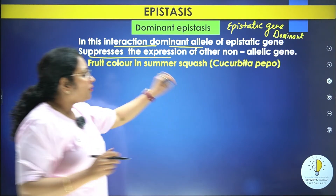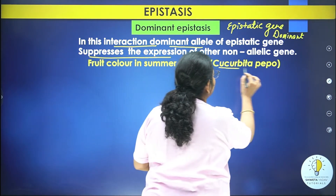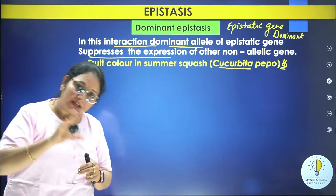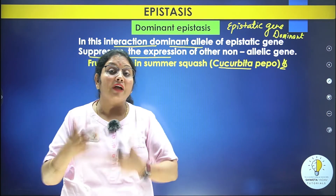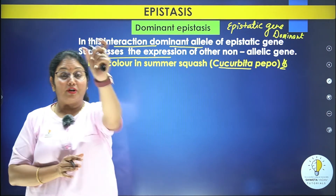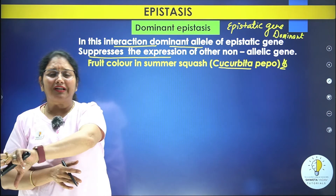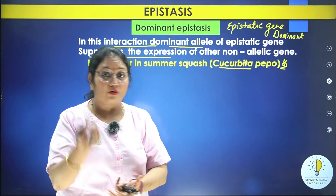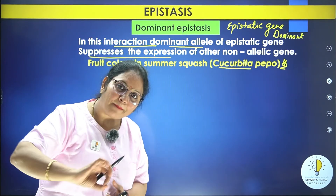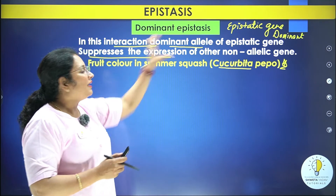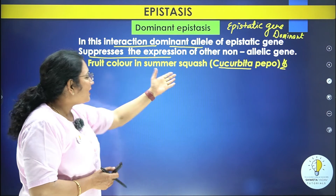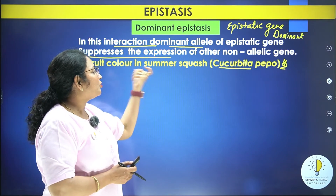Let's take an example — Cucurbita pepo, that is summer squash. This is important. Questions are asked about the ratio — what altered ratio is observed. The phenotypic ratio of Mendelian dihybrid cross gets modified. A new phenotypic combination is formed, and questions are asked about that new combination. So the example for dominant epistasis is Cucurbita pepo, commonly known as summer squash.